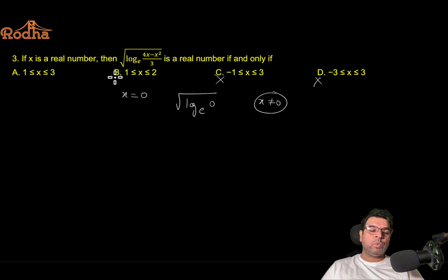Now we are left with two options. Take any value of x which is in one option but not in the other. This is 1 to 3, this is 1 to 2. So let's check x equal to 3. If I put x equal to 3, this is root of log base e, it will be 4 into 3, 12 minus 9, 3 over 3 log 1 which is 0. So log 1 is defined. I can have the value of this expression at x equal to 3. So x equal to 3 should be in my answer. But option B should not be in my answer. So this is ruled out. A is left.